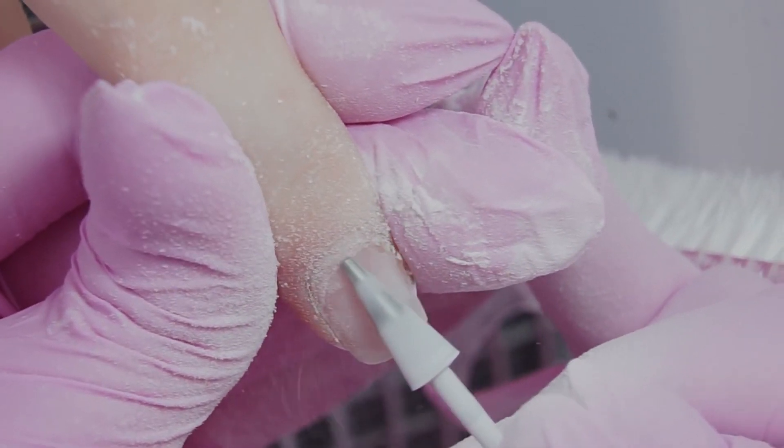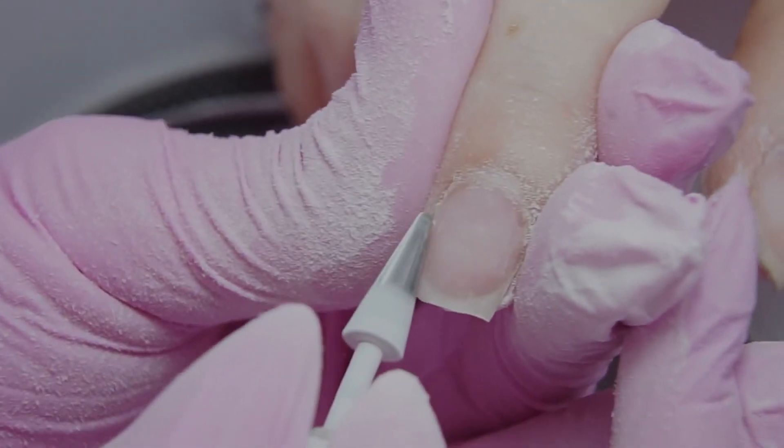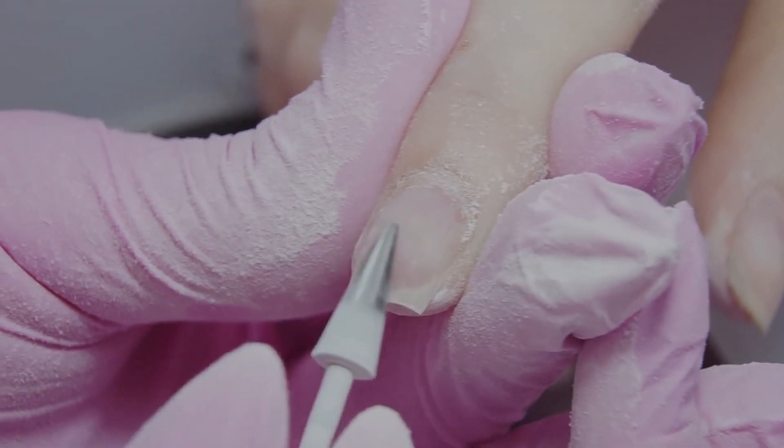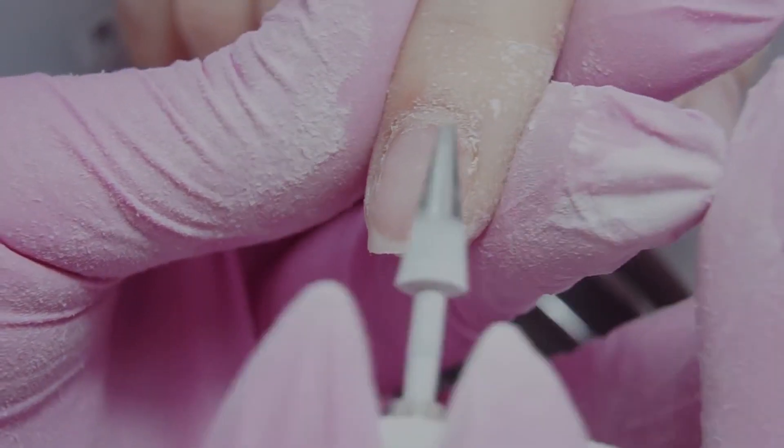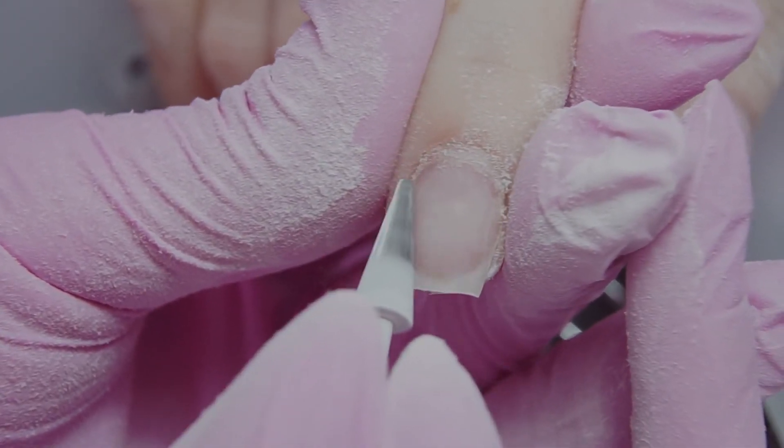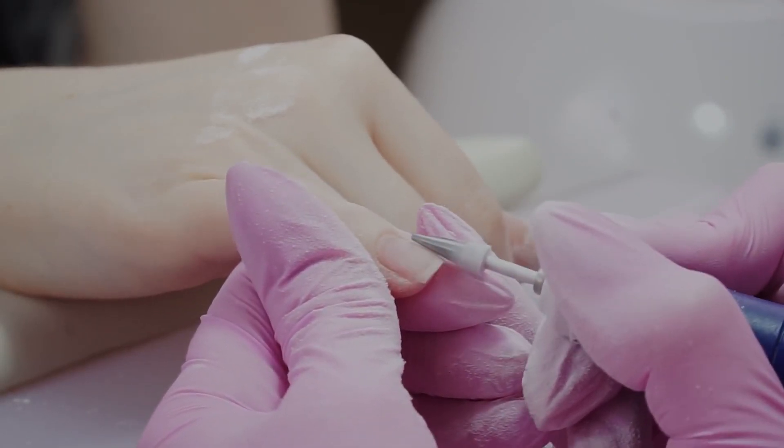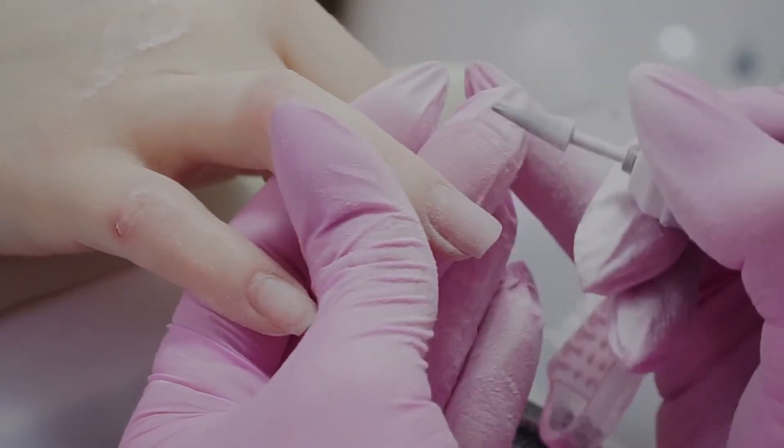Anyway, if you want to apply gel polish, there is no need to file off the base completely, if it holds on well, of course. But if you see any peelings, you have to remove them completely at this stage, so you won't waste your time on filing or buffing later. Move along the nail plate from right to left to smooth out the surface and get rid of bumps that have appeared.